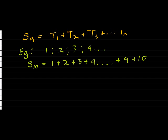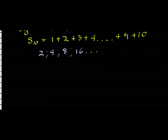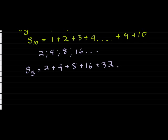Let's use another example. Let's look at 2, 4, 8, 16, etc. And then let's take S5. S5 would then be the first 5 terms. So 2 plus 4 plus 8 plus 16 plus 32. S5 would be the sum of those terms and you would get an answer for it.